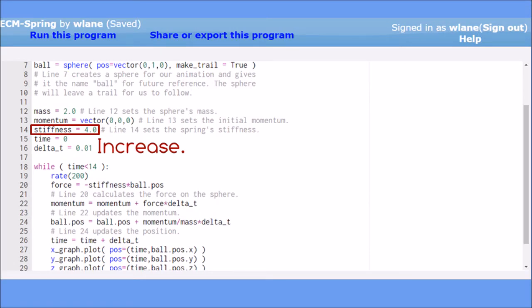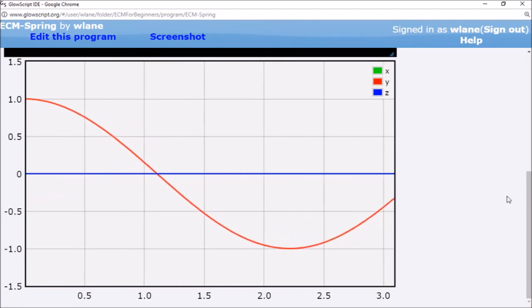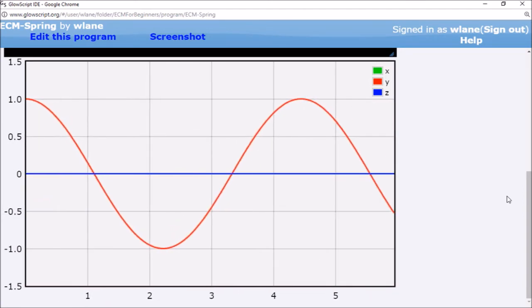If we go back to our code and increase the spring stiffness, we'll see that we again get a cosine curve, but this time the period has decreased. A stiffer spring oscillates faster.